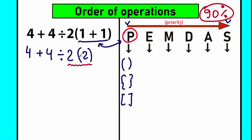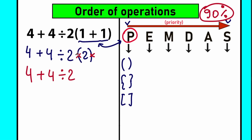According to basic PEMDAS, whenever you have a constant inside parentheses, we can get rid of the parentheses. Inside parentheses we have only 2, so we rewrite as: 4 plus 4 divided by 2 times 2. When we don't have a sign between the parentheses value, we can put a multiplication sign there — times 2. So we've completed the parentheses part, got rid of the parentheses, and now have an expression without parentheses.